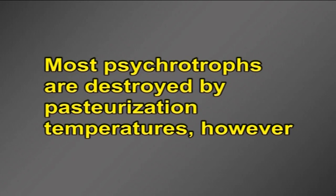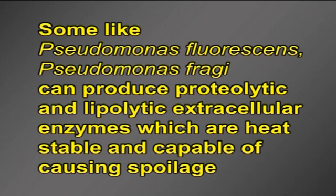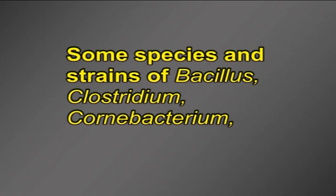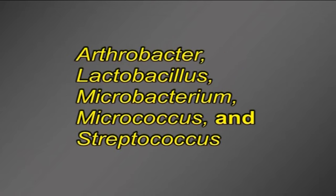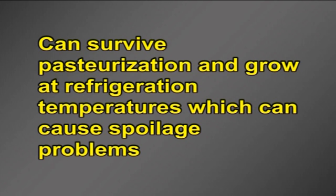Spoilage of milk: the microorganisms principally involved in spoilage are psychrotrophic organisms. Most psychrotrophs are destroyed by pasteurization temperatures. However, some, like Pseudomonas fluorescens and Pseudomonas fragi, can produce proteolytic and lipolytic extracellular enzymes that are heat stable and capable of causing spoilage. Some species and strains of Bacillus, Clostridium, Corynebacterium, Arthrobacter, Lactobacillus, Microbacterium, Micrococcus and Streptococcus can survive pasteurization and grow at refrigeration temperatures, which can cause spoilage problems.